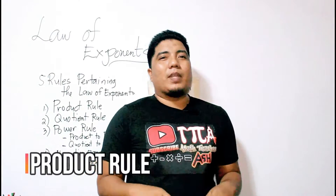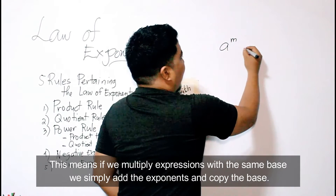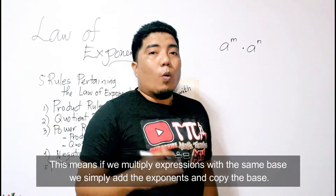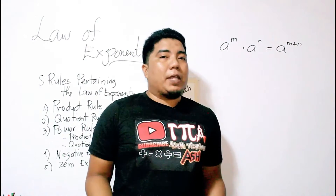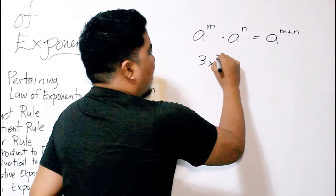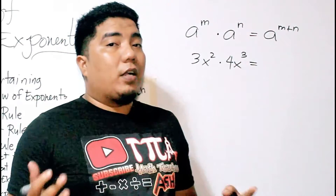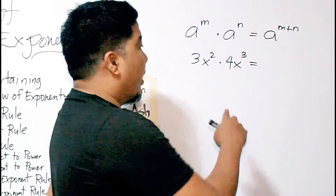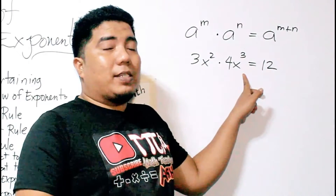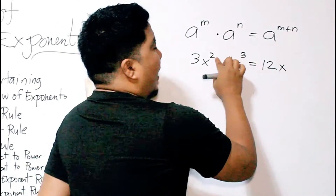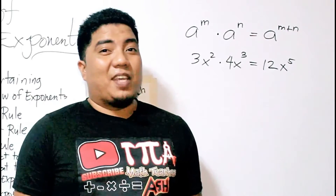Rule number 1: the product rule. If you are multiplying two expressions with the same base — say a to the power of m times a to the power of n — you just copy the base and add the exponents. For example, 3x squared times 4x cubed: since 3 and 4 are whole numbers with no same base, you multiply them directly: 3 × 4 = 12. Then x squared and x cubed share the base x, so you copy x and add 2 + 3 = 5, giving you 12x to the 5th power.